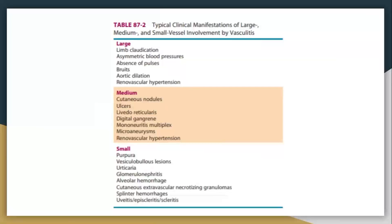Obviously imaging matters, but what the patient is actually presenting with can be a very helpful guide. If you're talking about an older person, you've already done most of the work — you're already on to the fact that this is most likely temporal arteritis. A young person — actually a young Asian female, or I've had an African-American female who has Takayasu's as well.